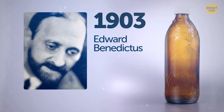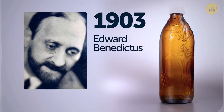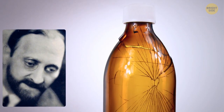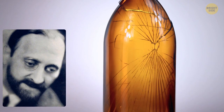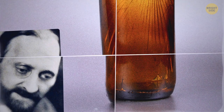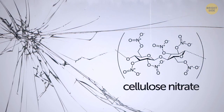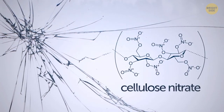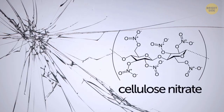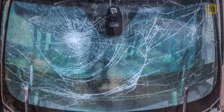In 1903, scientist Edward Benedictus accidentally knocked over a flask and was amazed to see that instead of shattering, it had only slightly cracked but maintained its shape. He discovered a substance coating the inside of the glass was keeping it together. That's how humanity came up with safety glass.